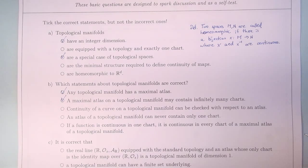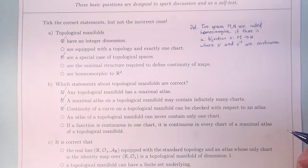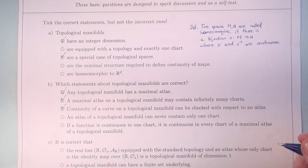Continuity of a curve on a topological manifold can be checked with respect to an atlas — yes, it can be checked. We saw this in the lecture. An atlas of a topological manifold can never contain only one chart — well, this statement is nonsense. Of course it can contain only one chart, and we will see an example for that later on.